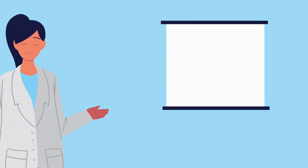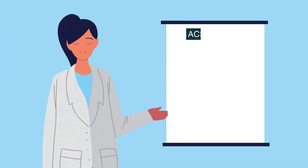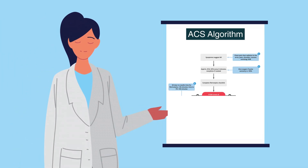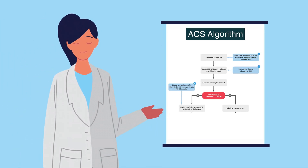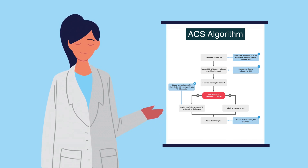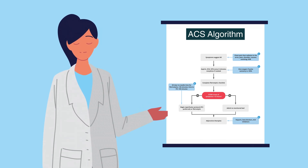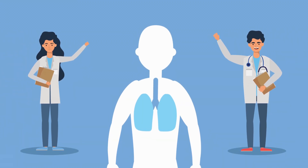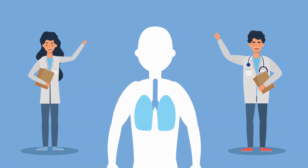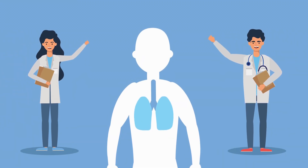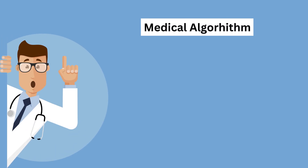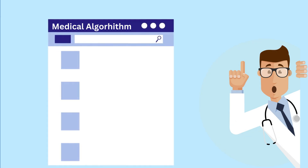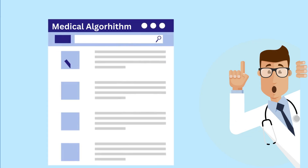In medical terms, an algorithm is a series of commands or a protocol. You start with one step, then take another one based on the patient's condition and prognosis. They provide clear guidelines for diagnosing and treating patients, ensuring consistency and improving outcomes. In this video, we are looking at five different algorithms that are absolutely crucial and you wouldn't want to miss any one of them.